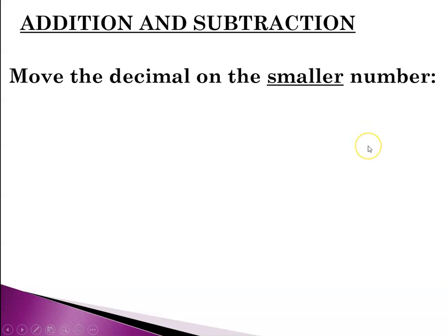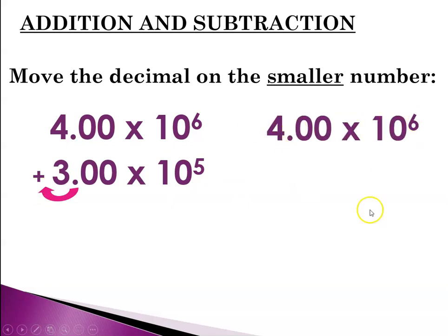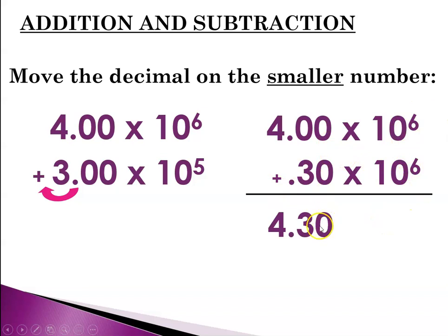So moving the decimal on the smaller number—and the thing is sometimes when people move the decimal they get all confused. If you're one of those people, no worries, just either use your calculator or convert it to standard notation first. So here we have our 4 times 10 to the 6 and we have our 3 times 10 to the 5th, and we're going to move over that decimal to the left, and so then what we would have is 4 million plus 0.3 million. And again, our exponent is the same now, so we would add the 2 up and our power of 10 is going to be 10 to the 6.